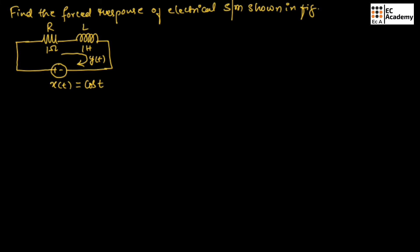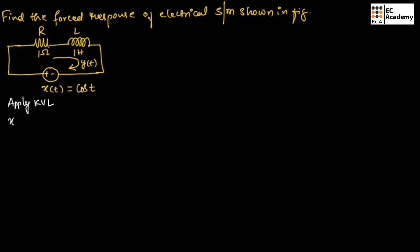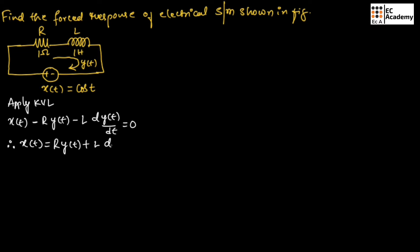Now, let us apply KVL for the above circuit. If we apply KVL, we will get x(t) minus R·y(t) minus L·dy(t)/dt is equal to 0. Therefore, we can write x(t) is equal to R·y(t) plus L·d/dt·y(t).